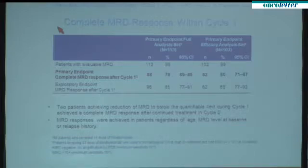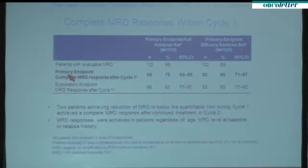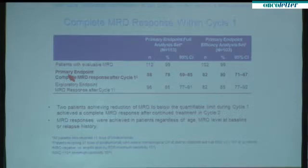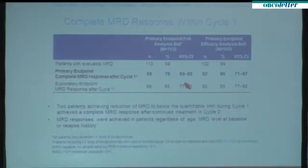This slide shows the major result of this trial. The primary endpoint was complete MRD response after cycle one, meaning no MRD detectable with a minimum sensitivity of 10 to the minus 4. There was also an exploratory MRD response endpoint, which also included patients who were still MRD-positive but below 10 to the minus 4. In the total patient population, the complete MRD response rate was 78% and the MRD response rate was 85%.